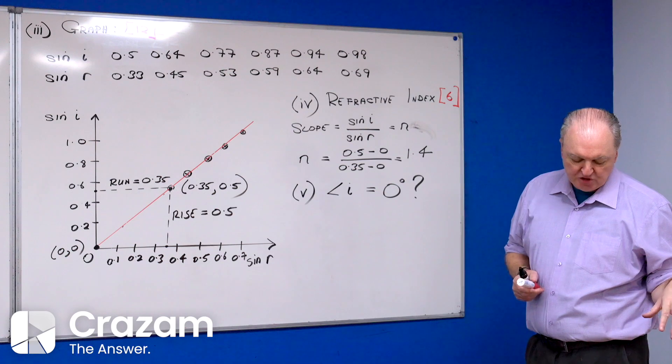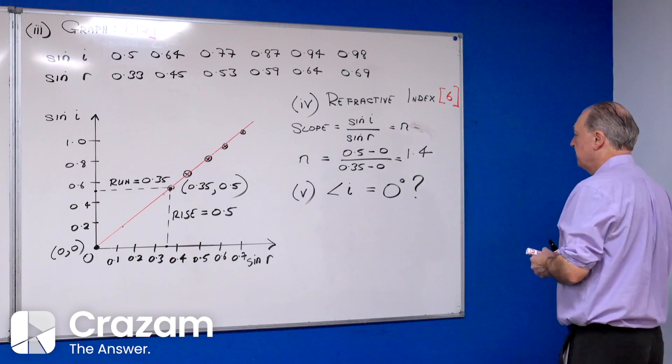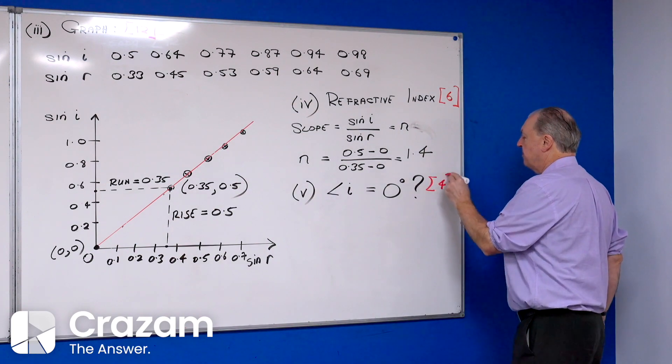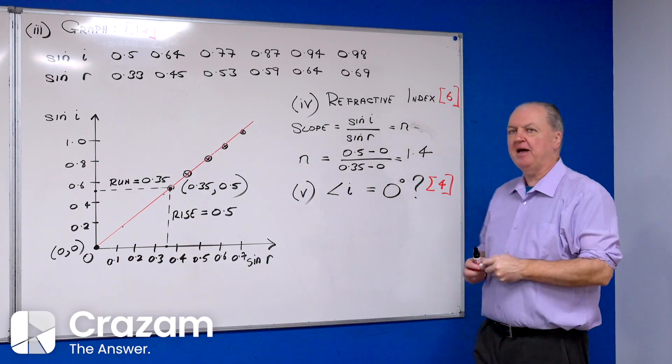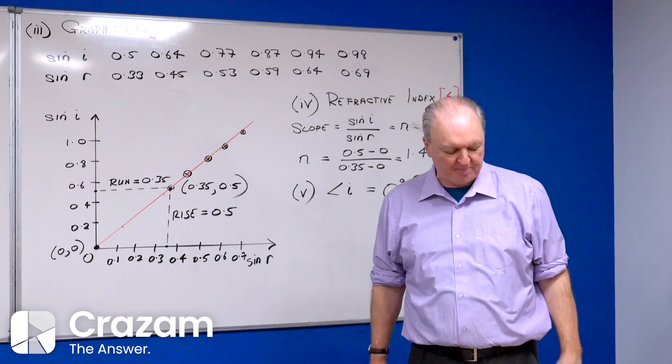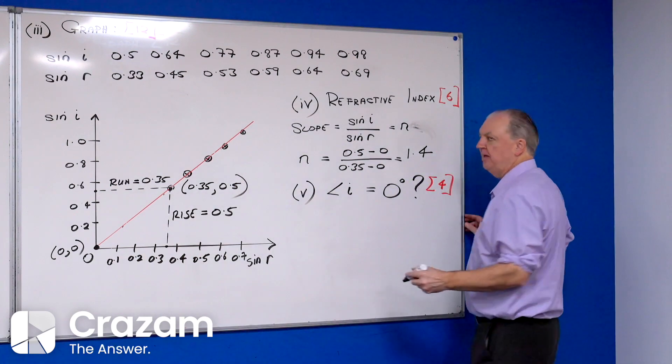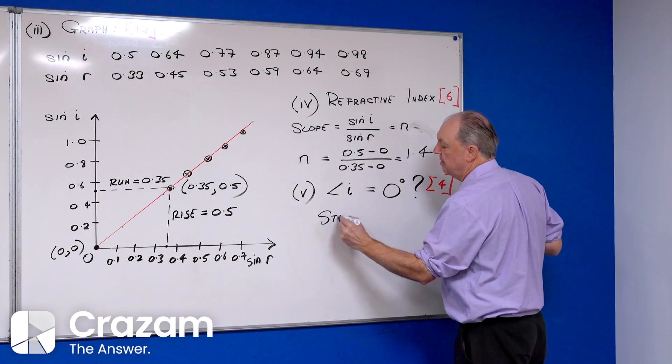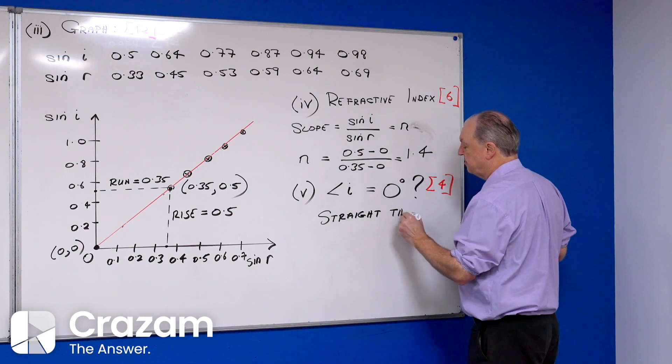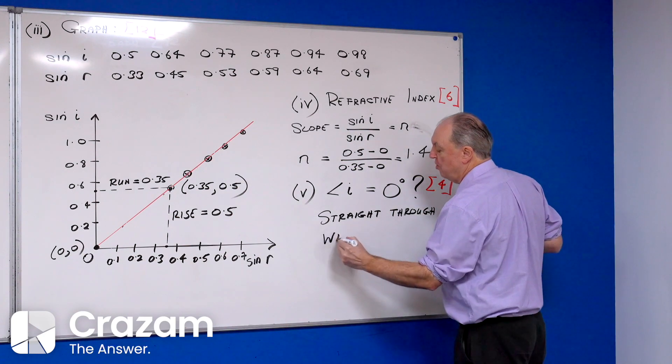The last thing they're asking is what will be observed if the angle of incidence was zero degrees. Four marks for this. Well, if the angle of incidence was zero degrees, the angle of refraction will also be zero degrees. Basically what will happen is the light will pass straight through with no refraction.